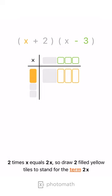2 times X equals 2X, so draw two filled yellow tiles to stand for the term 2X.